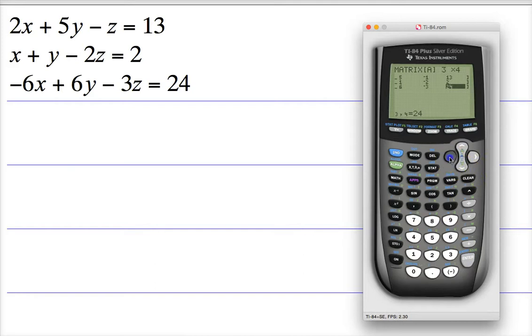So I'm just going to go back and make sure everything's all hunky-dory. 2, 5, negative 1, 13, that's good. 1, 1, negative 2, 2, that's good. 24, negative 3, 6, negative 6, perfect, so exactly like I want them to be.